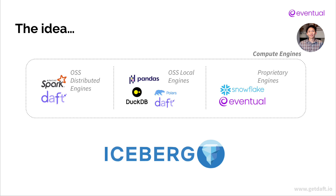This is the dream of Iceberg — you have this underlying storage layer, Iceberg gives you tables of data, and then you can use any compute engine you want. If you want distributed computing, there's Spark, there's Daft which I work on. If you want local computing on a single machine — my data is small enough, I'm reading a small partition — you can use Pandas, everybody's favorite Python thing. There are also new options like DuckDB, Polars, Daft for local performance. And then proprietary engines like Snowflake, BigQuery. The idea is Iceberg is down at the bottom, everything can read it, and you pick and choose what tool you want.